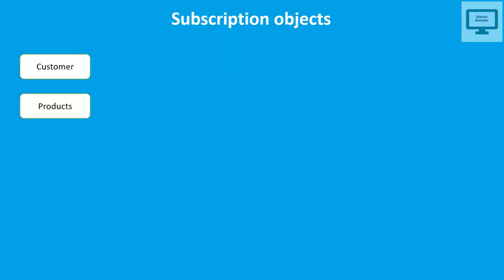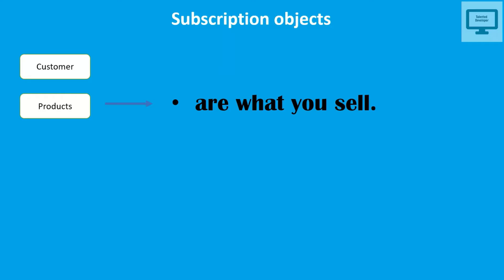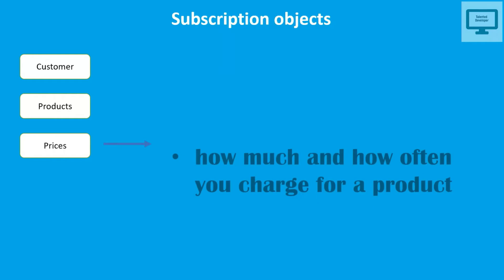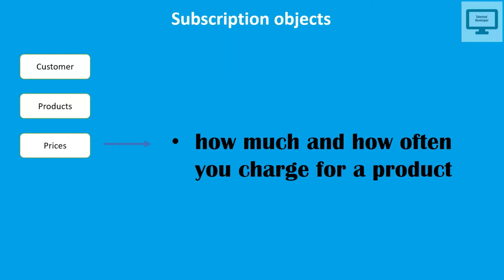Once you have the customer details, the next thing is the product — what you are going to sell to the customer. A product could be like a t-shirt or a photo, whatever you are selling. Next is the price: for your product, you set a price and charge the customer accordingly.